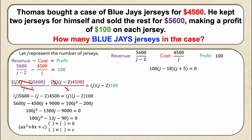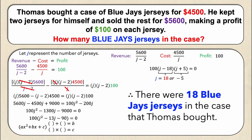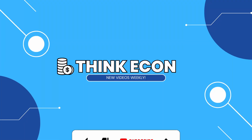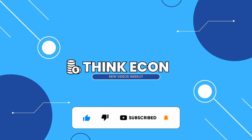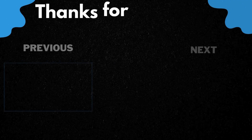The solutions are the j values that make each bracket equal zero: j equals 18 or j equals negative 5. Negative 5 is an inadmissible answer — mathematically possible, but it's not possible for a case to contain negative 5 jerseys. Therefore, there were 18 Blue Jays jerseys in the case that Thomas bought. We hope you found this video helpful — if you did, please like the video, subscribe to the channel, and let us know in the comments what economic topics or homework questions you'd like us to cover. Thanks for watching!